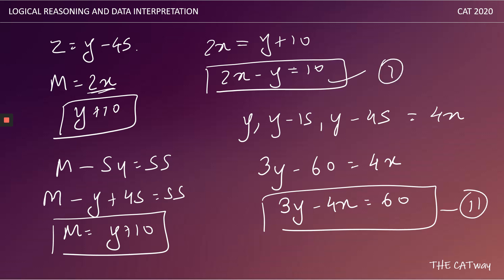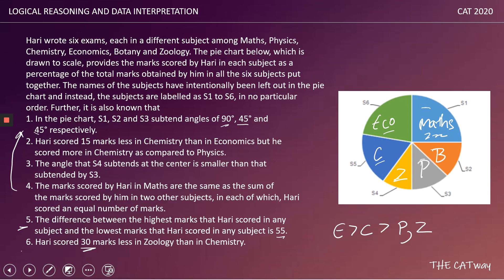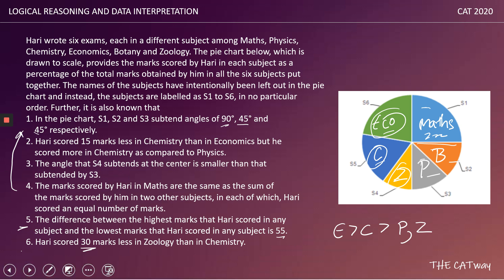Solving the two equations — 2x − y = 10 and 3y − 4x = 60 — we get y = 80 and x = 45. Therefore: maths = 2x = 90, physics = botany = x = 45 each, economics = y = 80, chemistry = y − 15 = 65, zoology = y − 45 = 35.